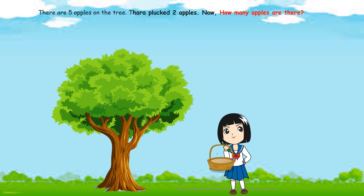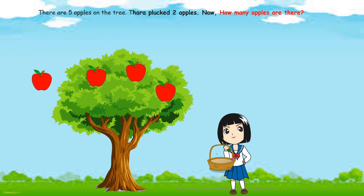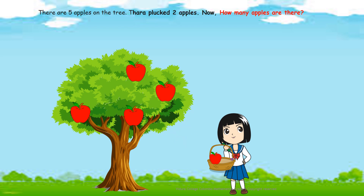Let's do another example. There are five apples on the tree. One, two, three, four, five. Out of that, Tara plucked two apples. One, two. Now, how many apples are there? Let's count. One, two, three. Five minus two equals to three.